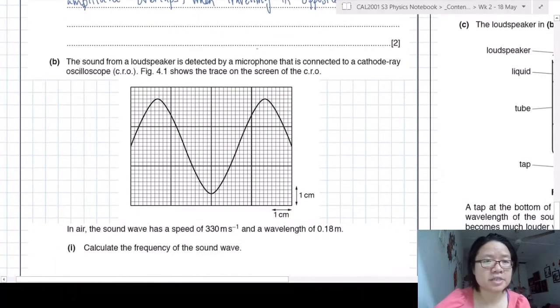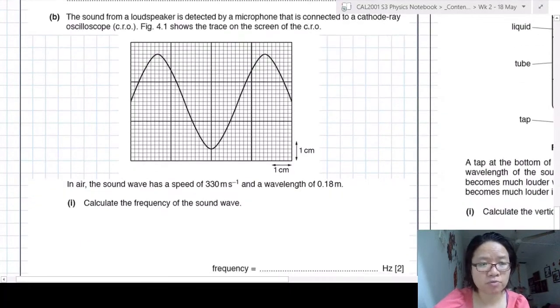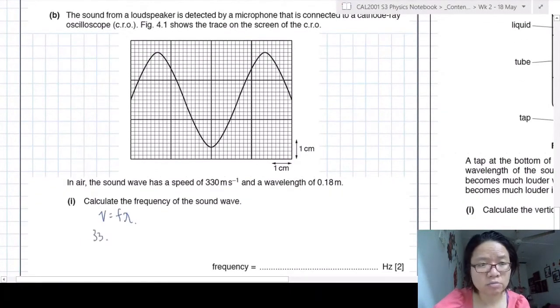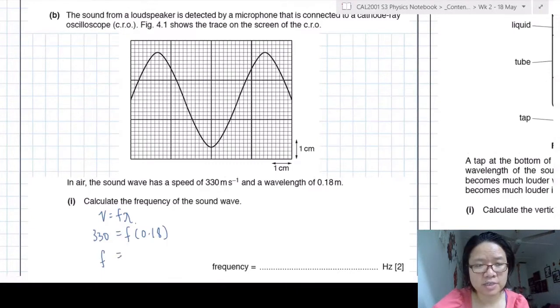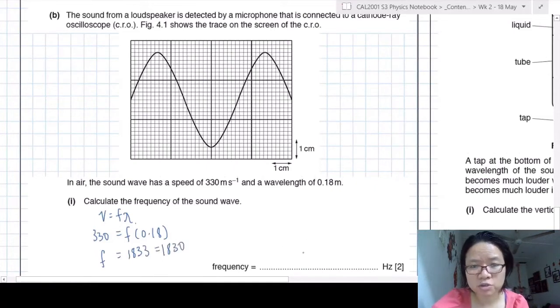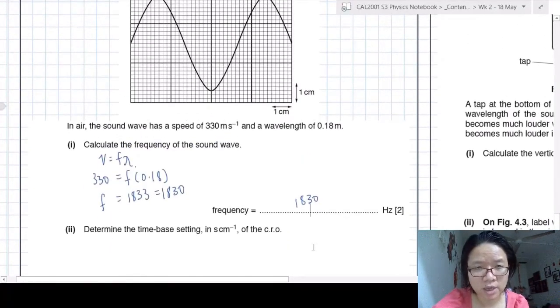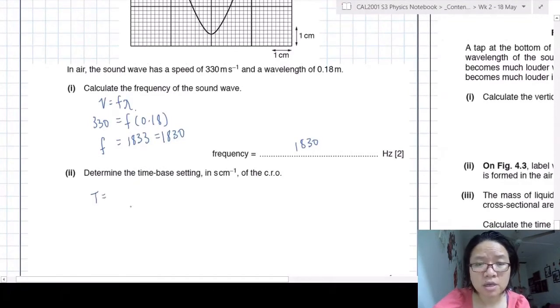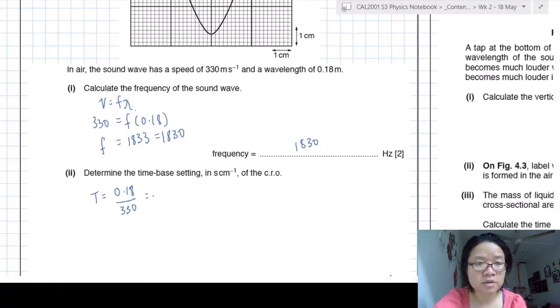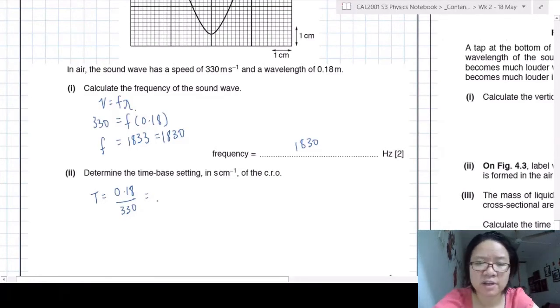So this is a CRO trace and detected by a microphone. You are given the wavelength and the speed of sound. So you're asked to find the frequency, which is just plug and play. So your frequency in this case is actually quite a number with repeated decimals. Please discipline yourself and write 3SF at most. So determine the time-based setting. So in this kind of situation, the first thing I'll do is I'll find the period. And as expected, this period number has been weird because you divided by 33. So I'm just going to write in 2SF. It might or might not use it later.